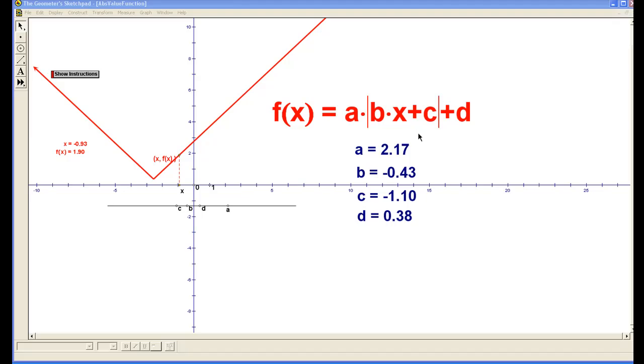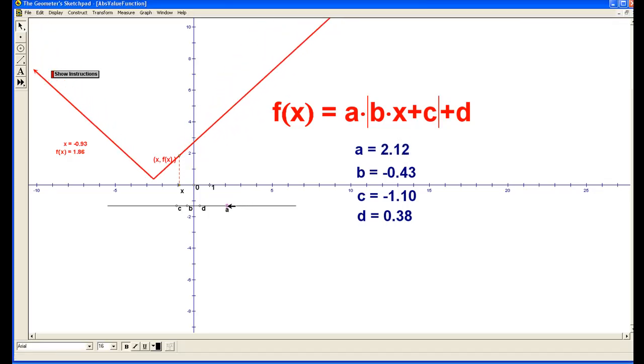In red, we have the function described on the previous screen, and below in blue we have the values of a, b, c, and d. This slider allows us to change the values of each variable and see how it affects the graph. Let's take a look at how the value of a affects the graph. You can see as we increase the value of a, the graph becomes narrower or stretched vertically. As a becomes negative, now the V opens downward.